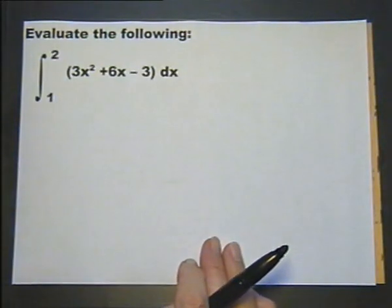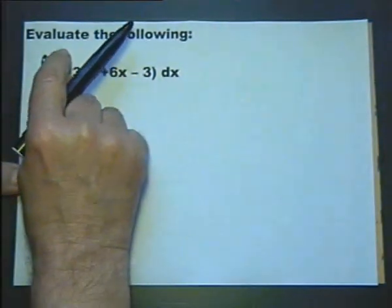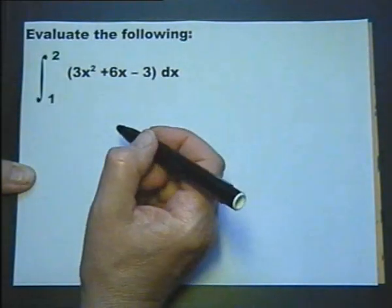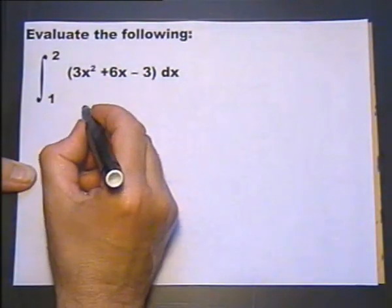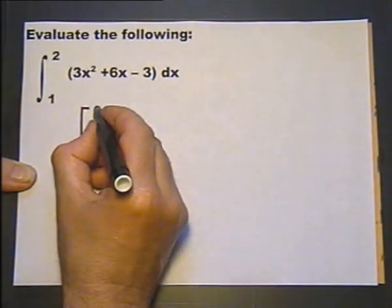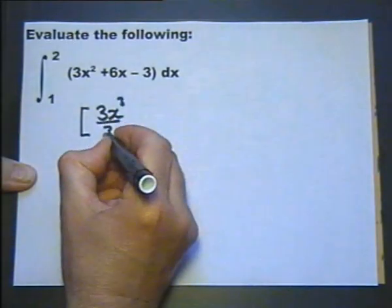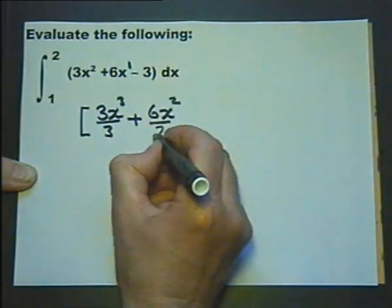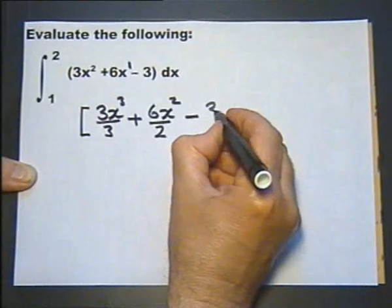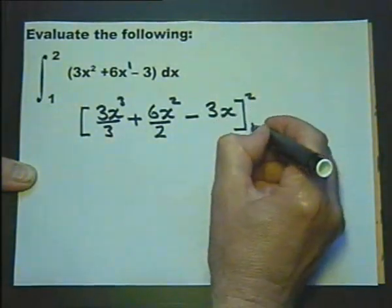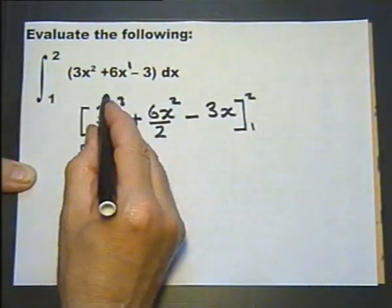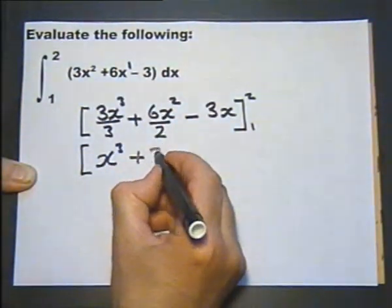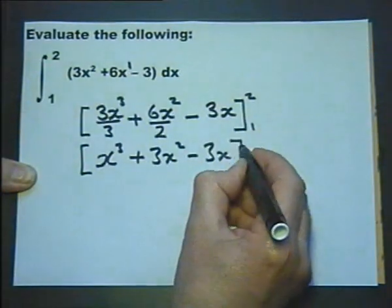Evaluate the following, which just means work out. So we have a definite integral because we've got an upper and lower limit. We could consider it as finding the area under this graph, but this question is just asking us to work out this definite integral. So if we integrate, we raise this 2 by 1 power and divide by the new power. We appreciate this little 1 there and we raise that by 1 power and divide by the new power, and if you integrate a number then the x returns. There's the upper limit and the lower limit. It's always a good idea to simplify as soon as you possibly can, and it makes the substitution easier.